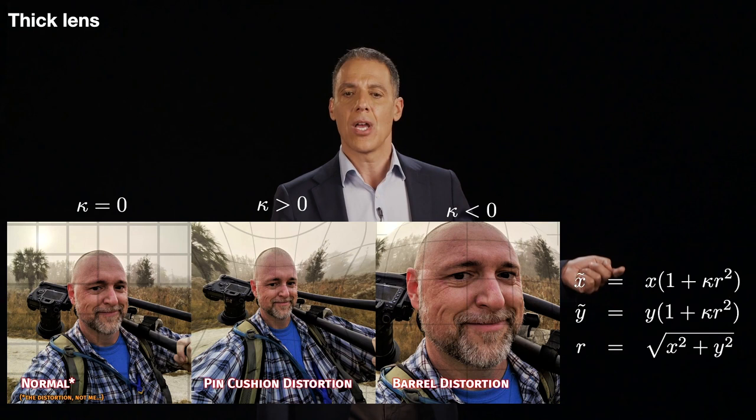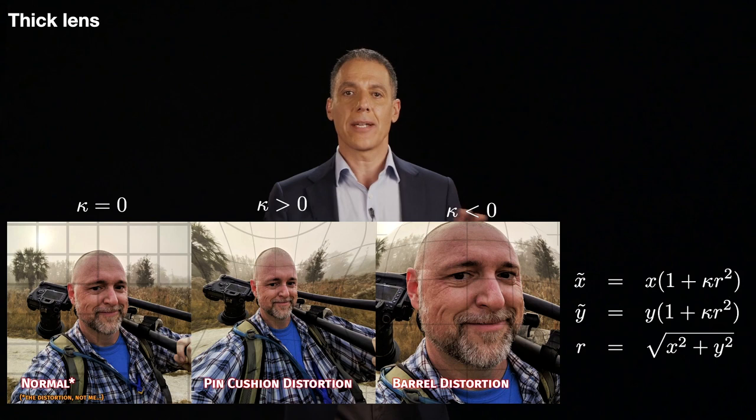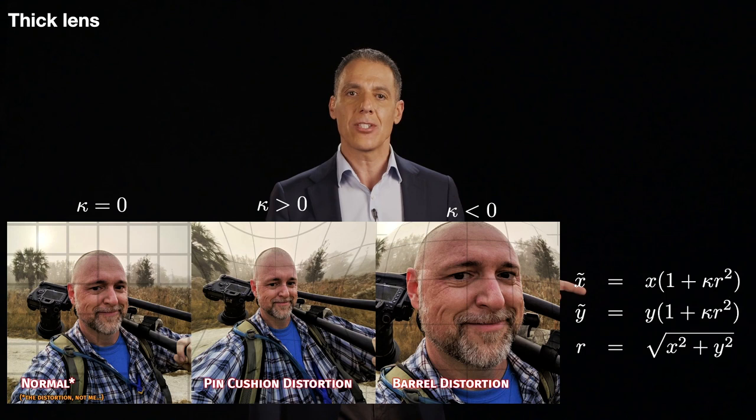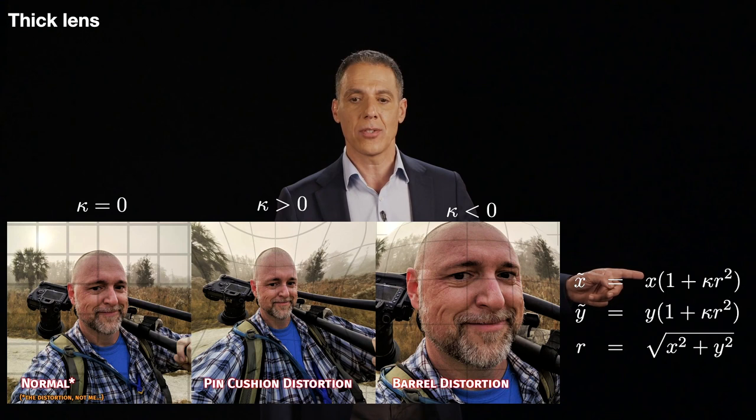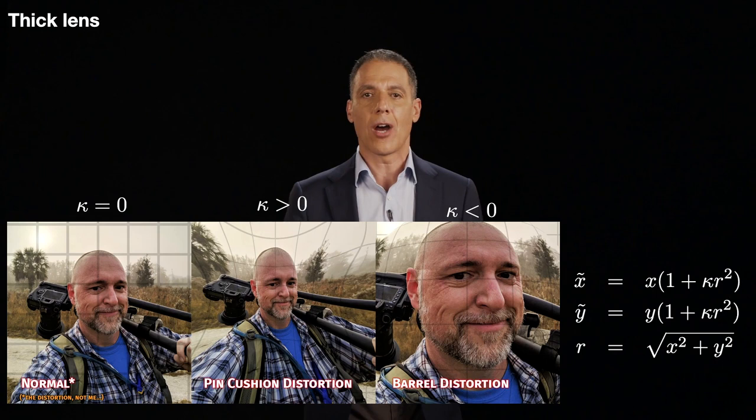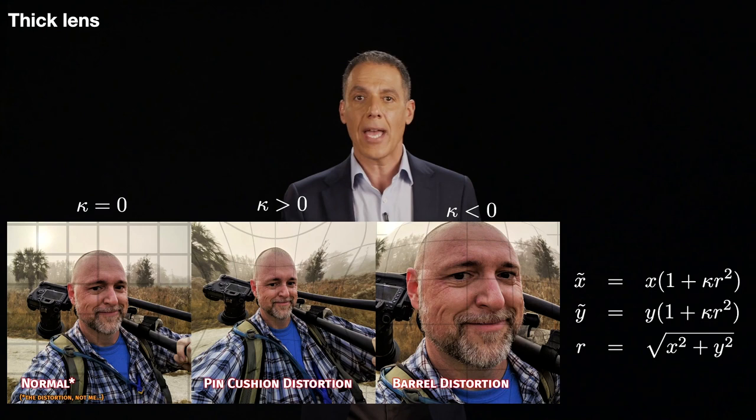So let's first talk about these equations. X and Y here are my X and Y points on an image corresponding to an undistorted image. And X hat, Y hat are going to be where those pixels move to after they are distorted. And you can see here that X hat is equal to X, the undistorted pixel location, times one plus kappa R squared. R squared is just the distance of each point relative to the center of the image, assuming that the center of the image is zero, zero. So R is just the square root of X squared plus Y squared, just the distance, the radial distance.